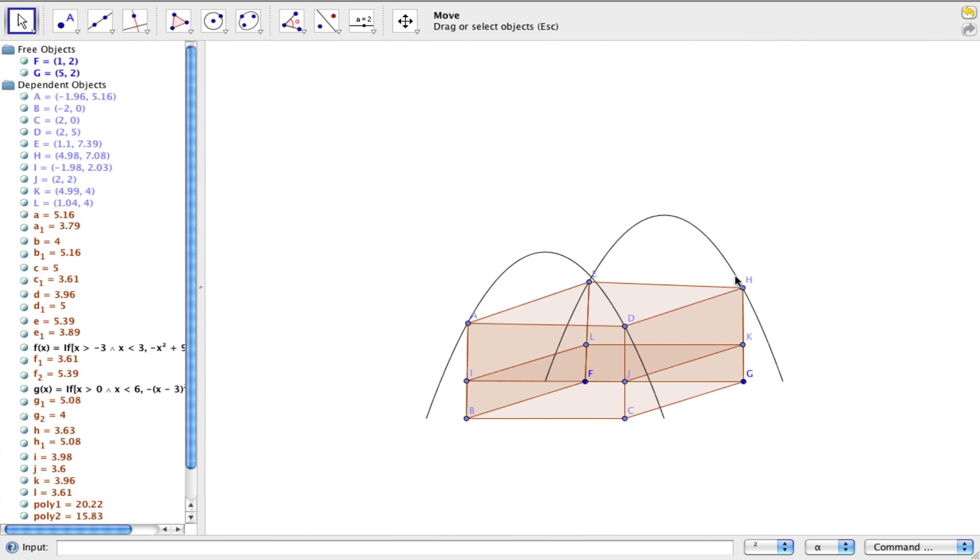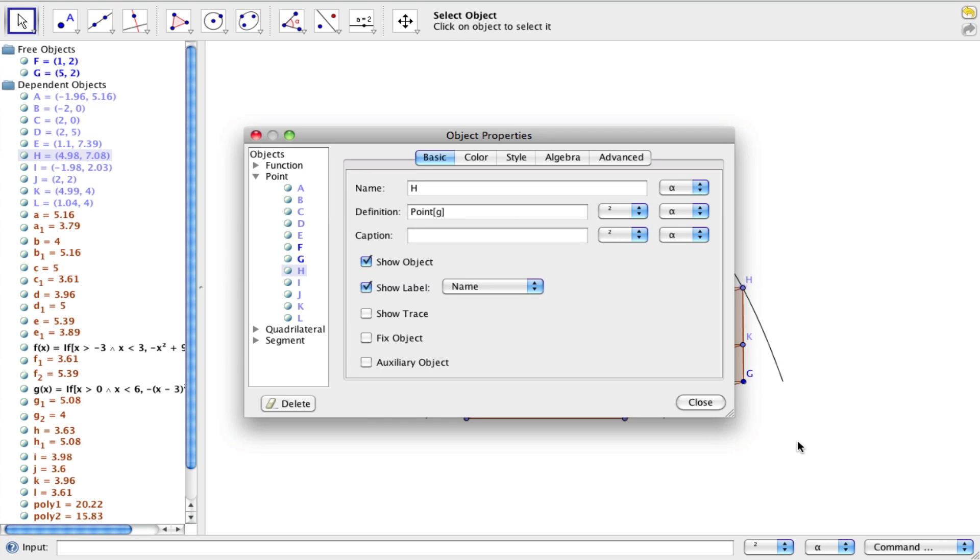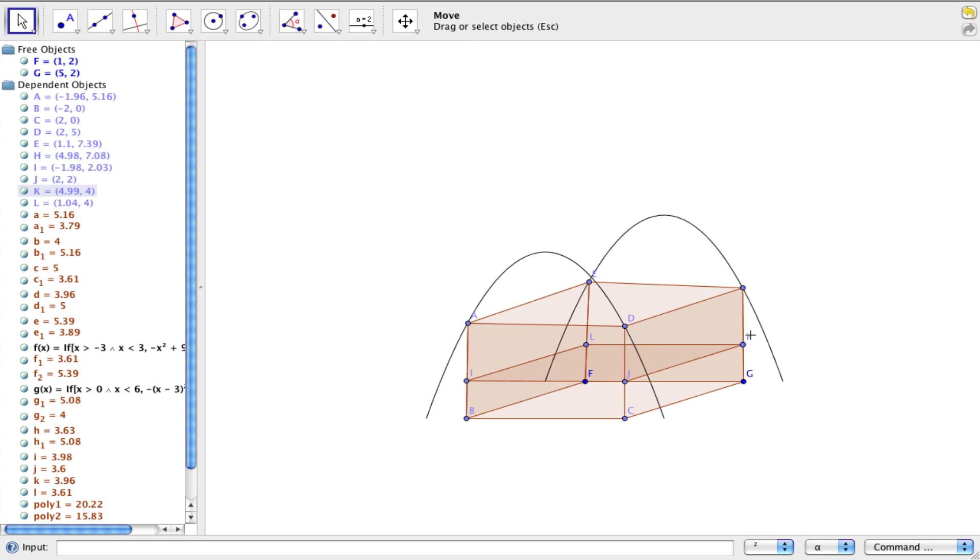And then lastly, you can right-click or control-click on the points, click on object properties, and you can turn off all the labels so you don't have to see all the names, all the letters.